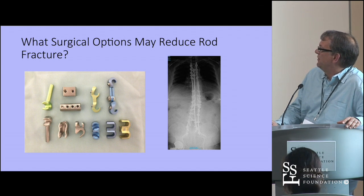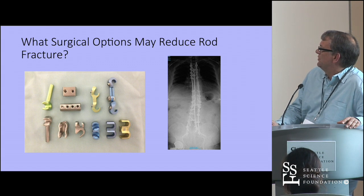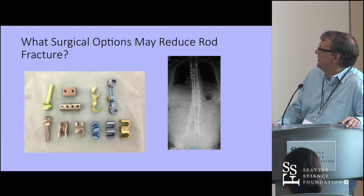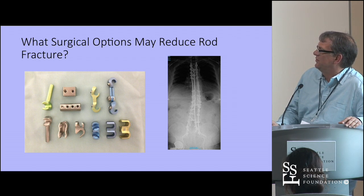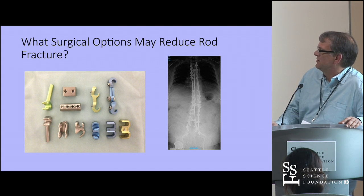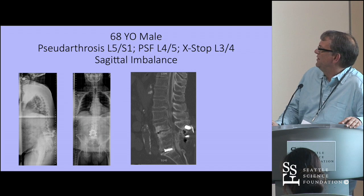There are a number of surgical options for augmenting constructs with ancillary rods. The X-ray on the right shows a nice example using a long transverse connector extending from top to bottom between the paired rods, along with offset connectors and domino devices to allow customization of these approaches.